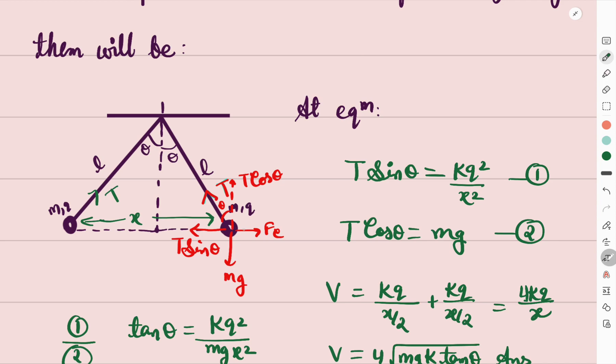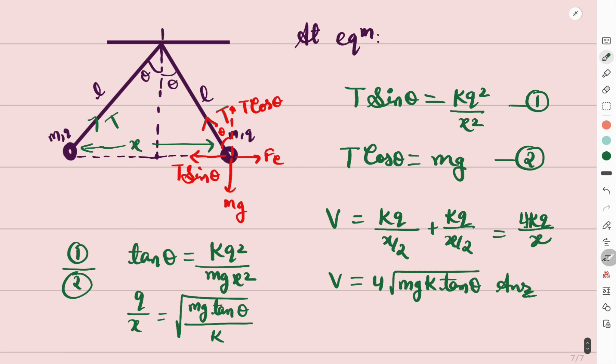...is charge pe electrostatic force ki baat karein to wo kq²/x² ke equal hoga. To T sin θ balance karega kq²/x² ko aur T cos θ weight ko balance karega. To yahan se hamne divide kiya equation 1 ko aur 2 ko, tan θ kya mil gaya - hamein kq²/(mgx²). To yahan se q/x ko hum likh sakte hain √(mg tan θ/k).